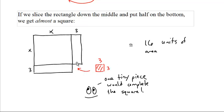Hey, one little tiny chunk would complete the square. If you added in a three by three area, which is a total of nine units of area to this side. Hey, wait a second.